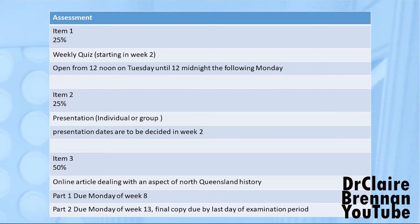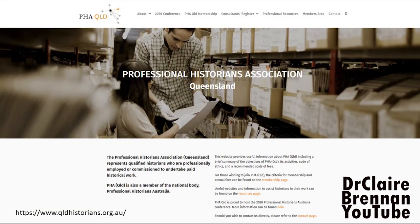Item number three is an interesting one. In this subject, at the end of it, you will have a piece of history published online. You can go and look at the Arcadia NQ website and see what past students have produced. So by the end of this you should have a published piece of history. That doesn't qualify you as a professional historian — partly because I won't be paying you for it, but mostly because you need qualifications beyond undergrad to be eligible to join the Professional Historians Association. This is a screenshot of their website and they do have interesting resources there — if you're interested in history this is a pathway you can pursue. In the second part of the lecture I'll talk about the different types of history writing that occur.